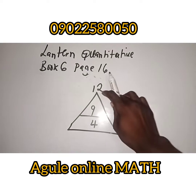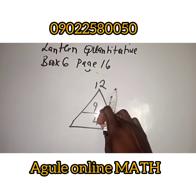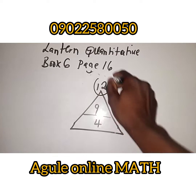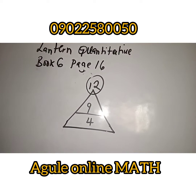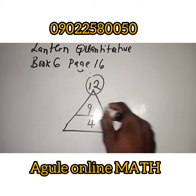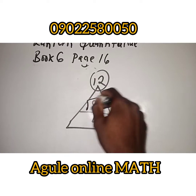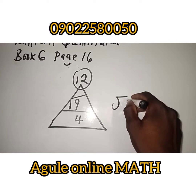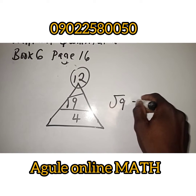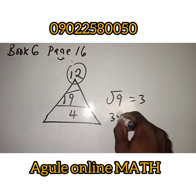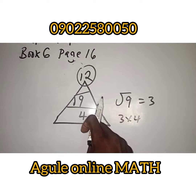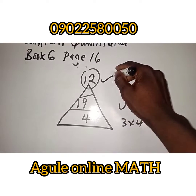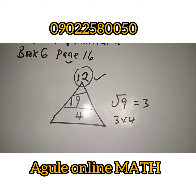So, we'll have 12, 9, and 4. If you want to get 12, this is a very simple thing. Take the square root of 9 — the square root of 9 is 3. So, that 3 times the 4 down here will give you 12. That is all.